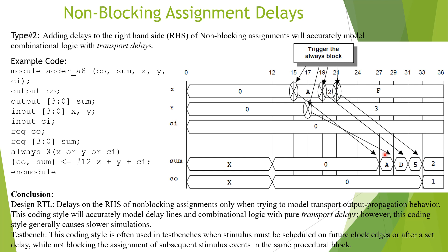This coding style will model combinational logic with transport delay. When doing the design, delays on the RHS of non-blocking assignments will model transport delay output propagation behavior. This coding style will accurately model delay lines and combinational logic with pure transport delays, but simulations run slower because of the non-blocking assignment delays. When writing the test bench, this coding style is often used when stimulus must be scheduled on future clock edges or after a set delay while not blocking the assignment of subsequent stimulus events in the same procedural block.